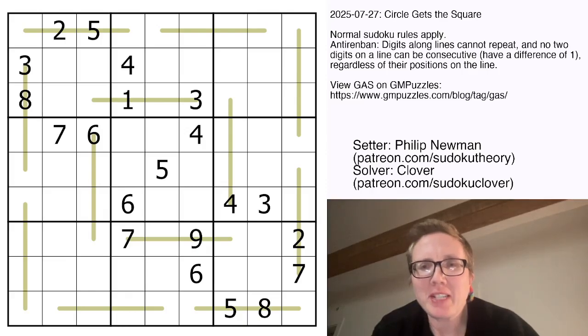Hello, my friends. I'm Clover, and this is Genuinely Approachable Sudoku. Today we are solving Circle Gets the Square by Philip Newman.